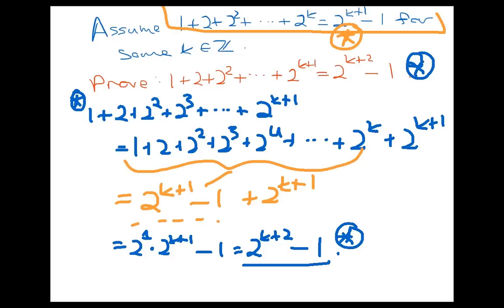That ends the proof, because I've established the base case and then proven the inductive step. In other words, I've gotten on the stairwell and shown that I can get from one step to the next no matter where I am. In the next few videos we're going to continue with examples of this hugely powerful method of proof in a variety of contexts. So keep watching.